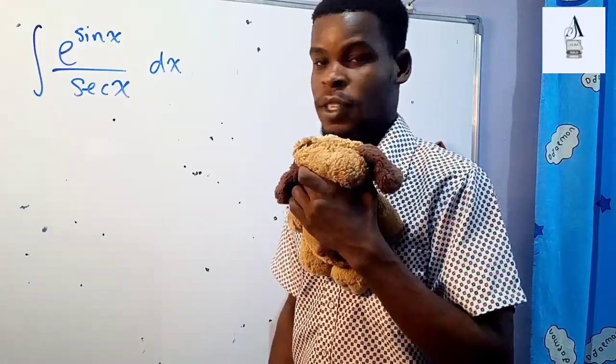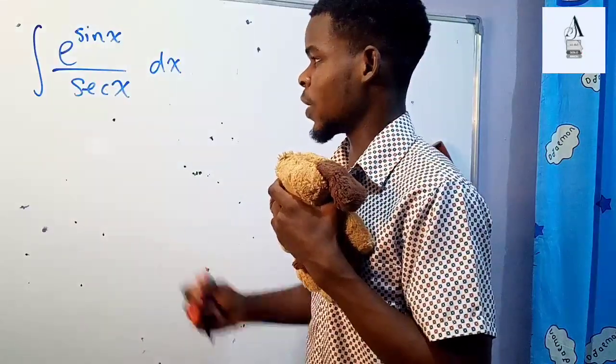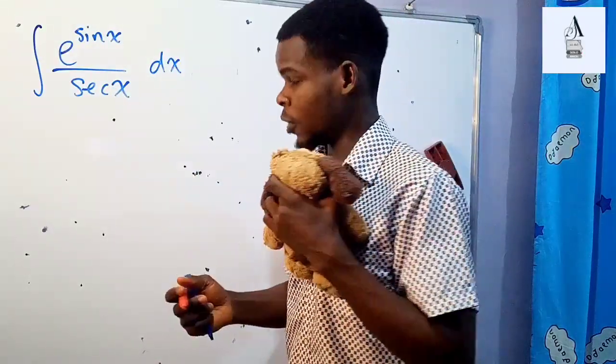Okay, we're going to find the antiderivative of this function. We have the function to be e to the power sine of x divided by secant of x, and we are doing that over the x variable.